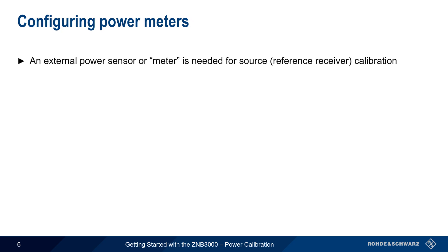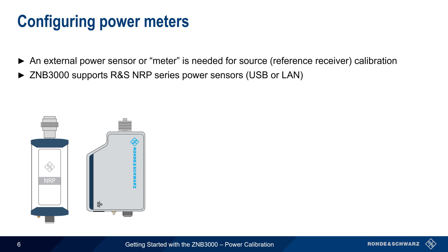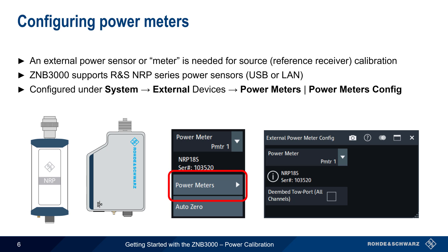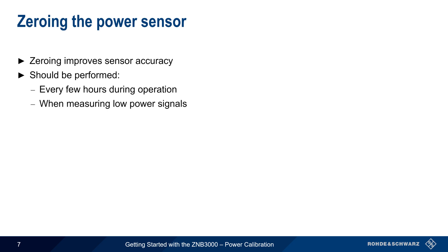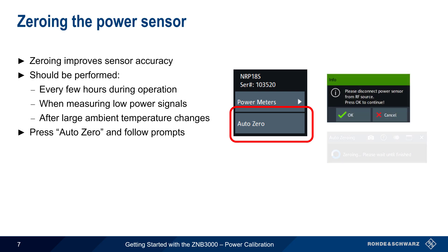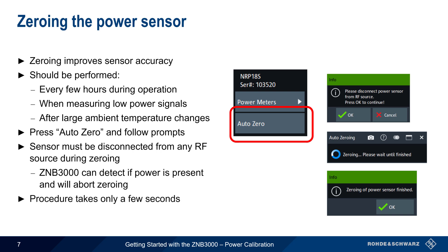An external power meter is needed when performing source or reference receiver calibration. The ZNB3000 supports most Rohde & Schwarz NRP Series power sensors, including both USB and LAN models. These devices are selected and configured under System External Devices, then either Power Meters or Power Meters Config. Zeroing the selected power sensor will improve sensor accuracy and should be performed every few hours under normal conditions, but is particularly important when measuring lower power signals or after a large change in ambient temperature. Press Auto Zero and follow the prompts to start zeroing. The sensor must be disconnected from any source of RF power during zeroing, but the ZNB3000 will automatically abort the test if it detects power is present at the sensor.